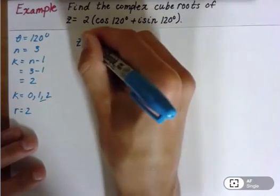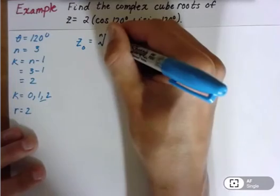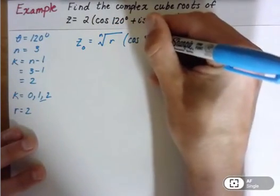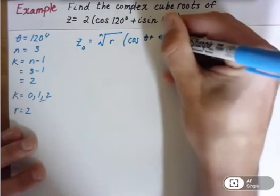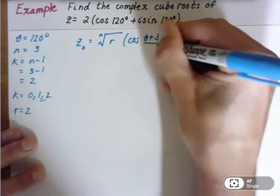It's going to be the nth root of r times cosine of theta plus 360 degrees times k over n, all that over n.